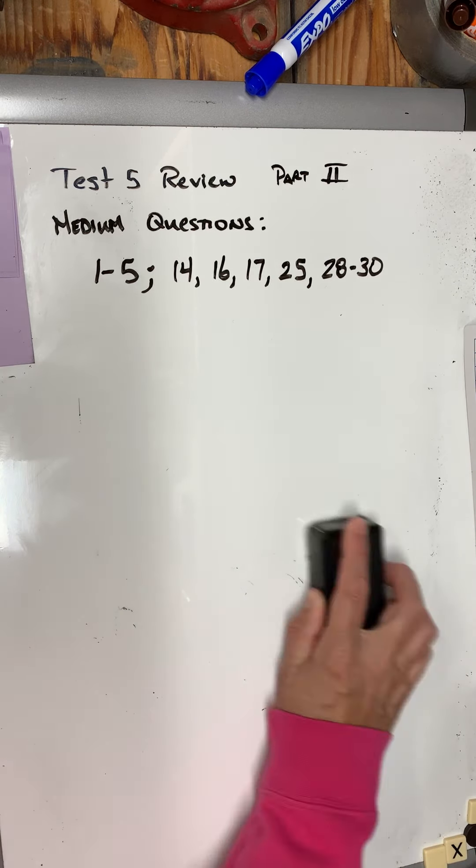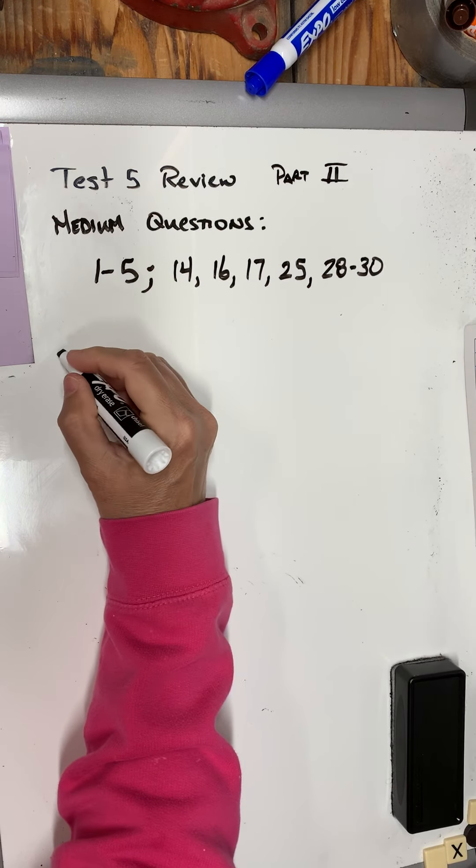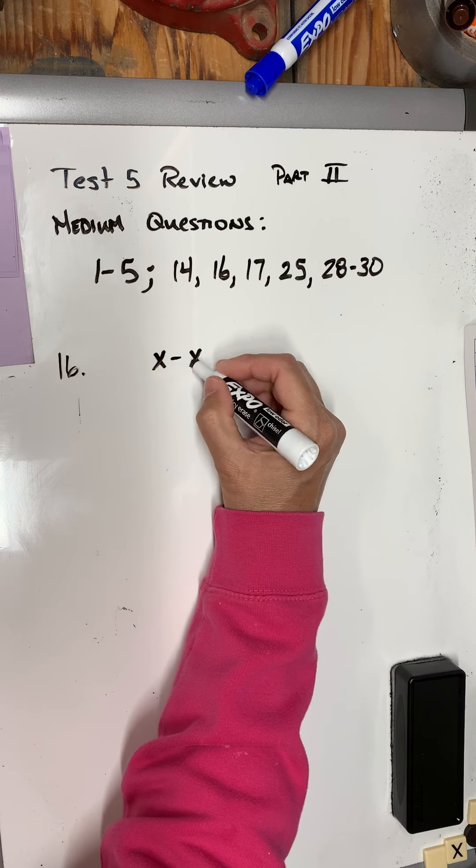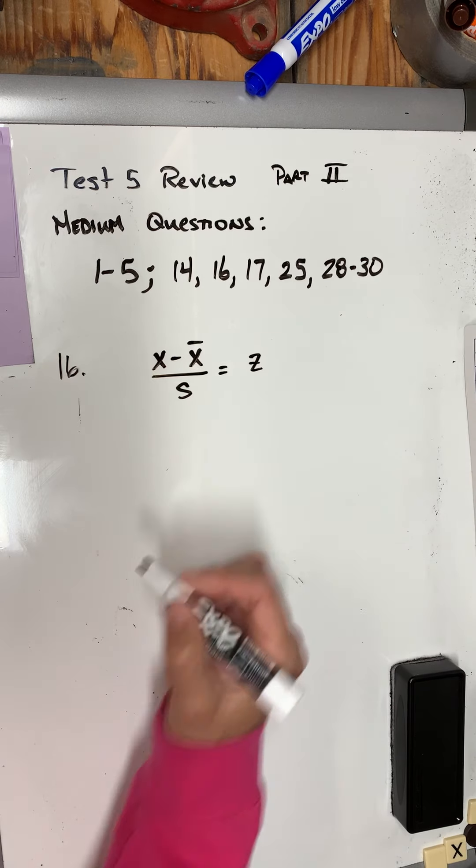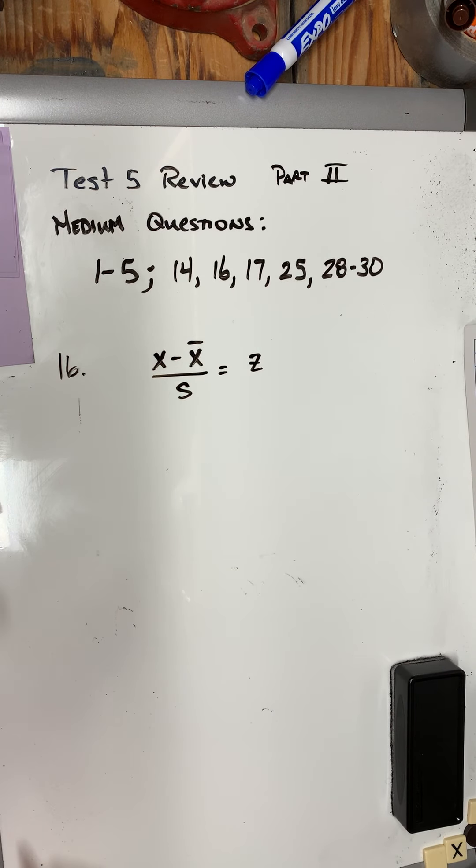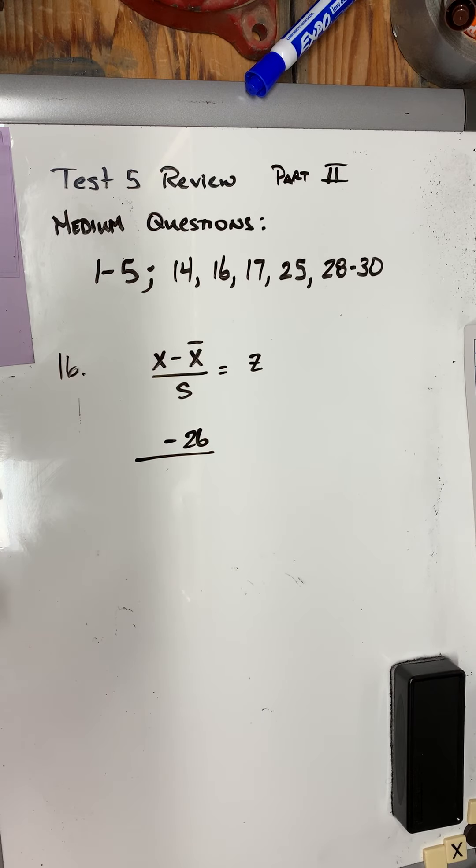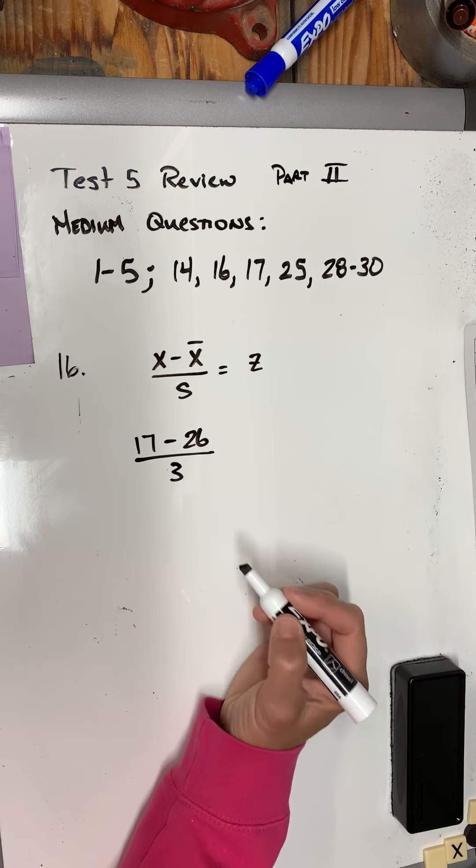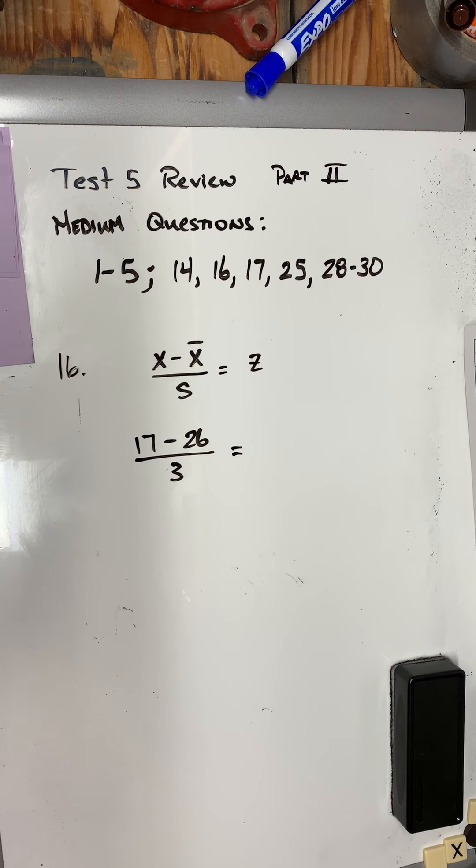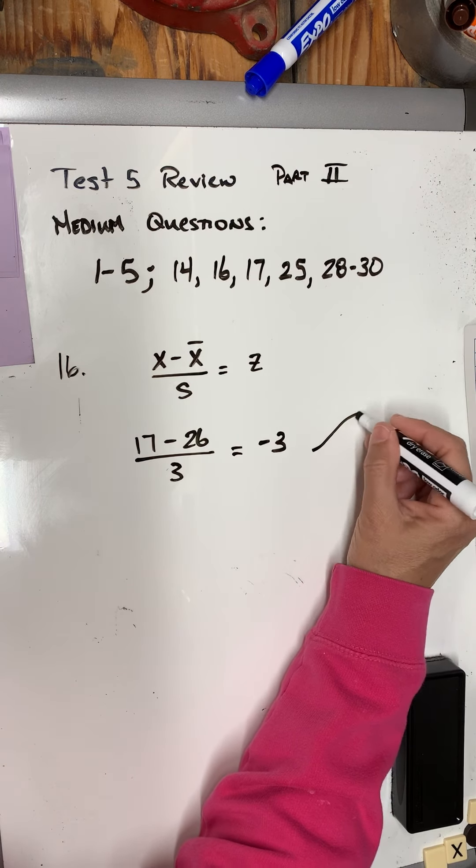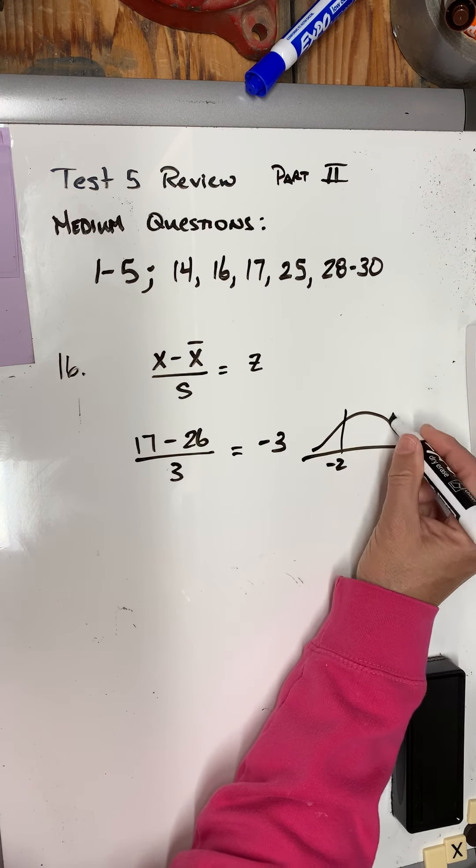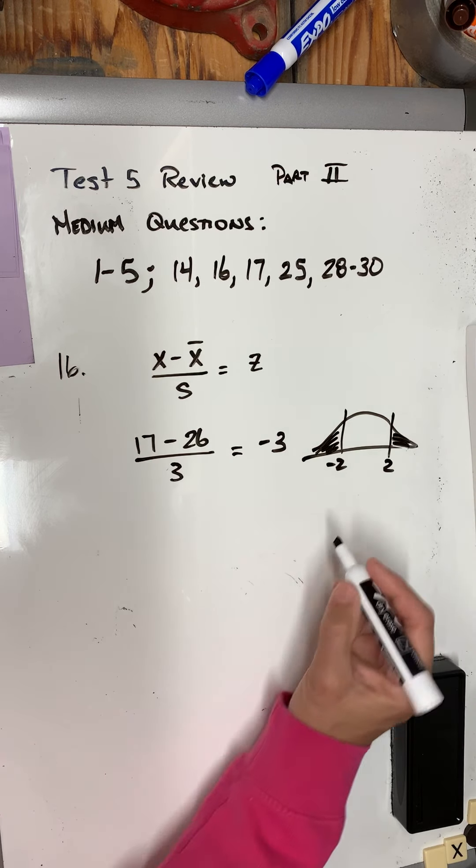So 16 uses this formula, which is x minus the mean over the standard deviation gives us the z-score. It says in the wild, monkeys eat an average of 26 bananas—so that's an average—with a standard deviation of 3. One monkey eats only 17, so that's the individual monkey they want me to find the z-score for. So 17 minus 26 is negative 9 divided by 3, which is negative 3. Then they ask me, is this unusual? And the answer is yes, it's unusually low because anything that's either below negative 2 or above 2 is going to be unusual.